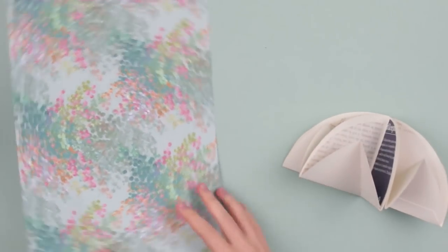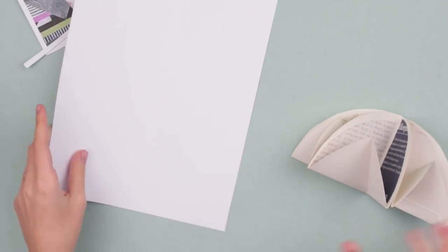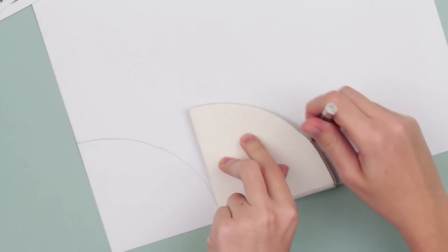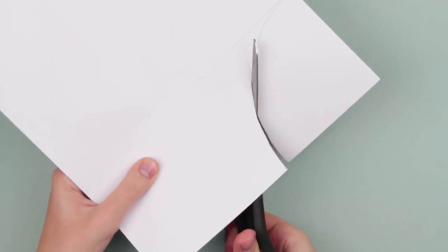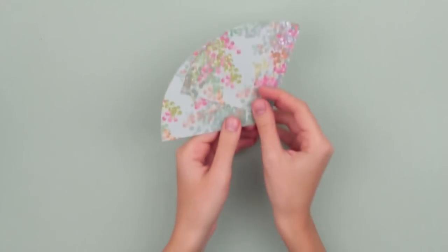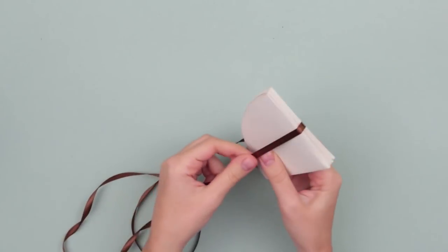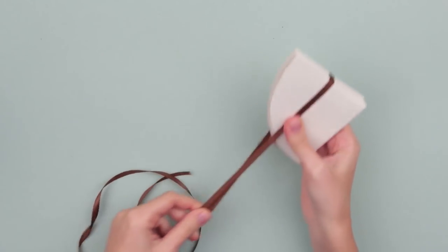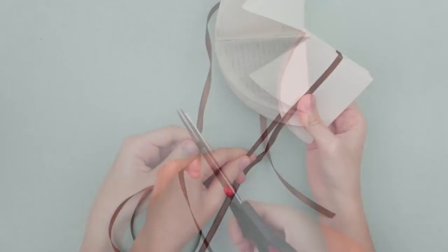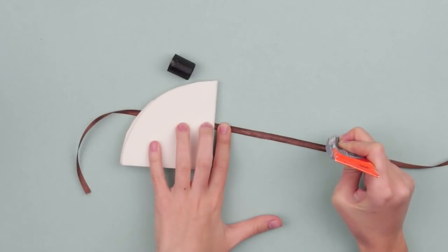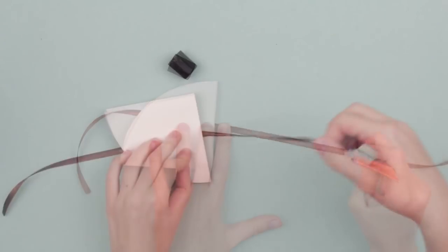Take patterned paper, turn over the sheet and trace the album twice to get two equal elements. Cut them out. Wrap the album with a ribbon, leaving loose ends on both sides. Cut off the excess. Carefully add multi-purpose glue to the ribbon and attach it to the album.